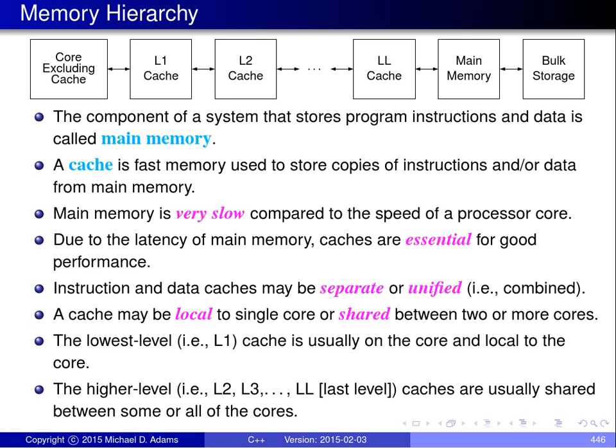The memory hierarchy in a computer system stores program instructions and data in main memory. The processor core reads program instructions from memory and executes them, which causes it to read and write data to main memory. Main memory is extremely slow compared to the speed of a processor core. It's not unusual for a processor core to wait 100 clock cycles or more to read data from main memory. Since most cores can complete one instruction per clock cycle, that's potentially 100 instructions lost while waiting.